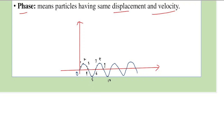Now let's look at points 1 and 3. They have the same displacement from the mean position, but they have different velocities. Based on the wave direction, if particle 3 is going up, particle 1 is coming down. Likewise, particles 4 and 6 have the same displacement but different velocity directions. So same displacement alone does not mean same phase.